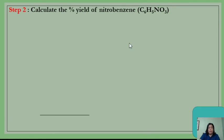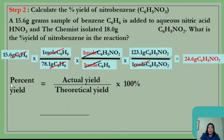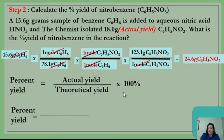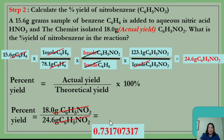Let's proceed to step 2: calculate the percentage yield of nitrobenzene. Use the formula: percent yield equals actual yield divided by theoretical yield, times 100. The actual yield is 18.0 grams of nitrobenzene, and the theoretical yield is 24.6 grams. Divide these values — you will get the decimal result from your calculator.